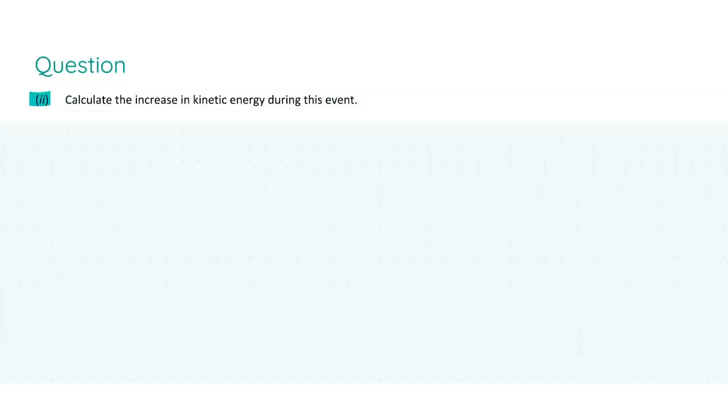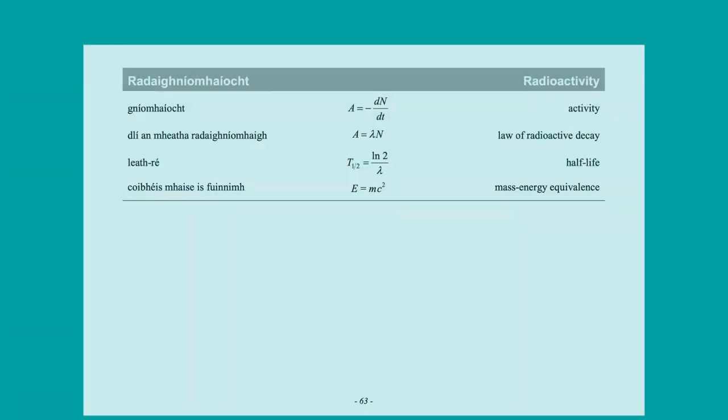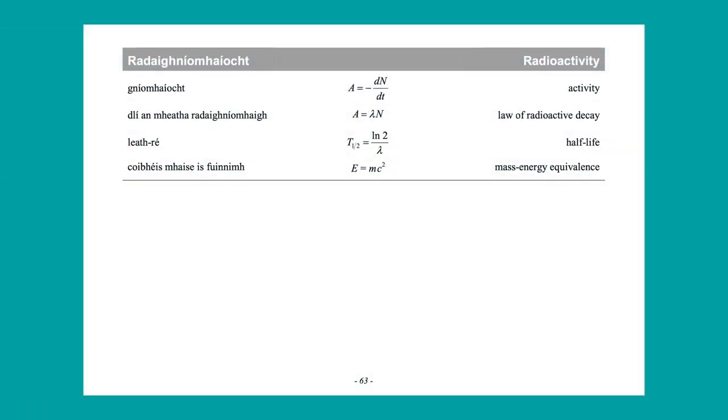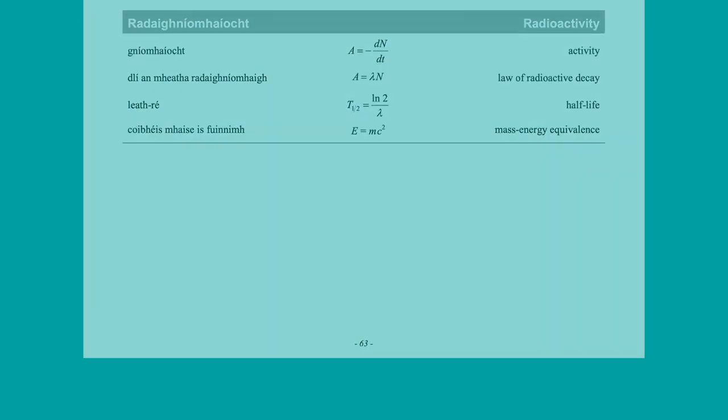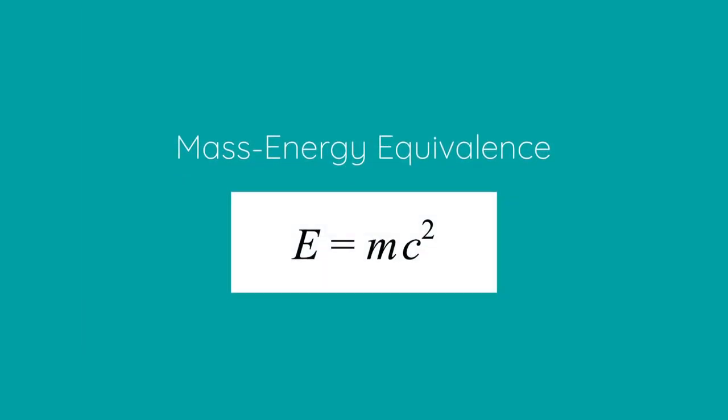Moving on to part 2, we're asked to calculate the increase in kinetic energy during this event. In this question, we are looking at mass-energy conversion, i.e., the reduction of overall mass from this reaction will be converted into energy. For this, we will need the formula E equals mc squared under mass-energy equivalents, which can be found on page 63 of your Formula and Tables book. We will also need the value for the speed of light in a vacuum, which can be found on page 47.